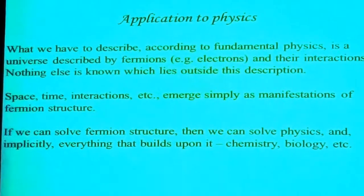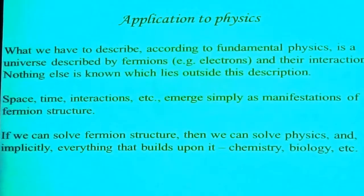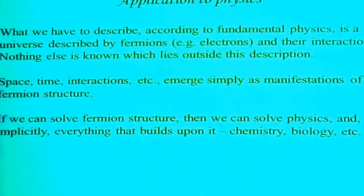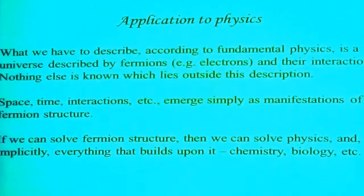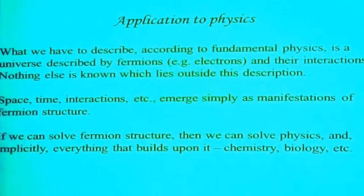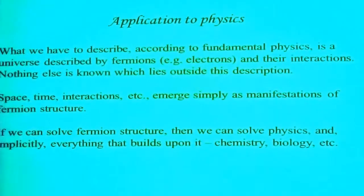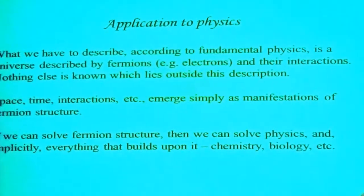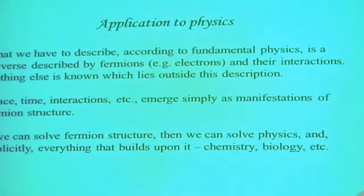What we want to describe is the physical world as we know it. As far as we know, in the universe there are only fermions — things like electrons — and their interactions. Everything else is a version of that. Nothing we know actually lies outside that. Space, time, all the interactions are manifestations of fermion structure. So if we can solve the structure of these particles, then in that sense we can solve physics.